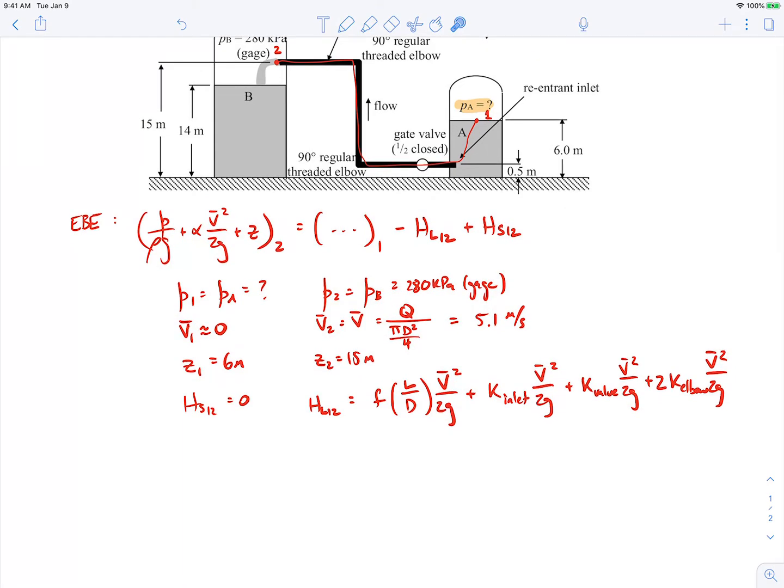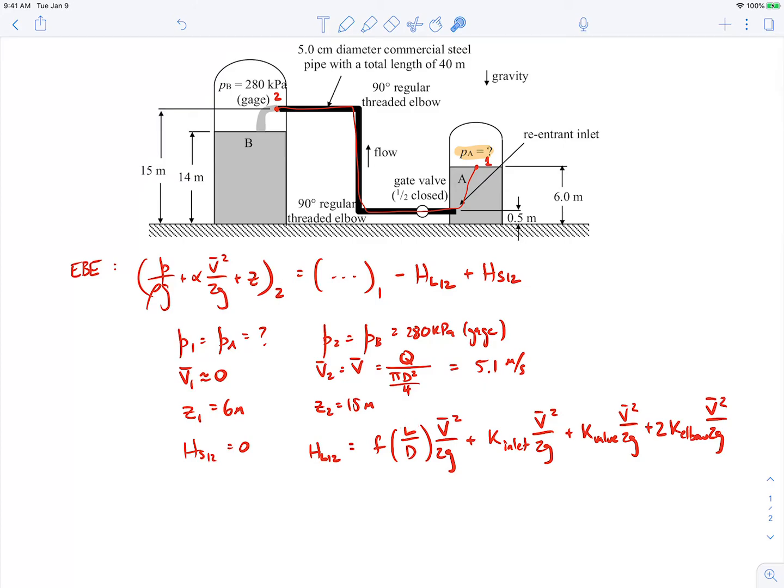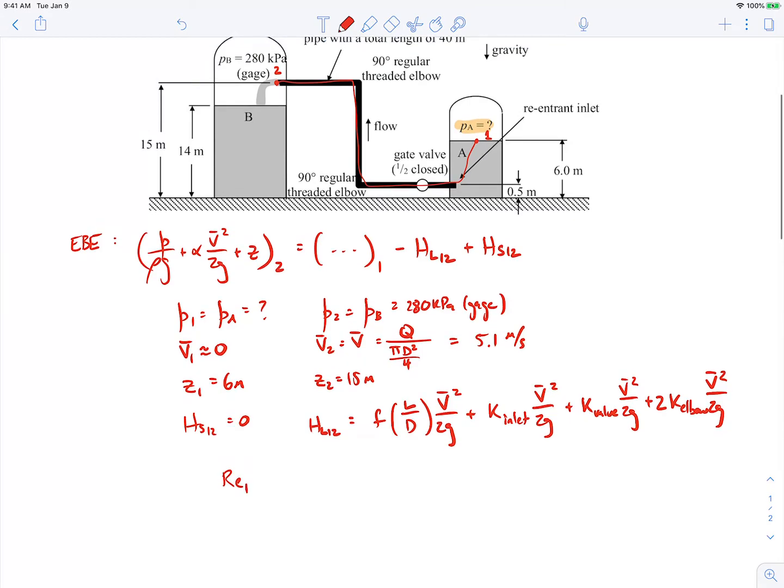All right. So we now need to figure out what the friction factor is. We know the length L that's given here is 40 meters. We know the diameter D is 5 centimeters. We need to find that friction factor. So there we'll go to the Moody plot. In order to find that, we need to find the Reynolds number. Now the Reynolds number based on the pipe diameter will be the velocity in the pipe times the diameter divided by the kinematic viscosity. We know all of these numbers. We can work this out. This comes out to be 200,000. So clearly, we're dealing with turbulent flow.